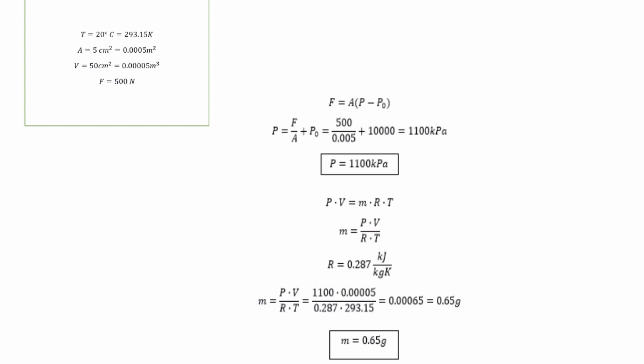V equals 50 cm cubed equals 0.00005 m cubed. And F equals 500N.